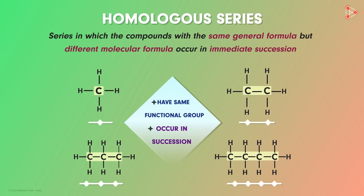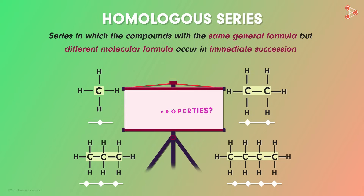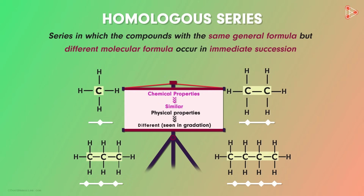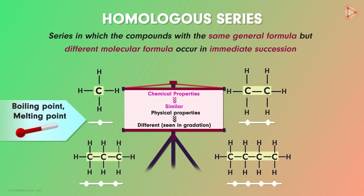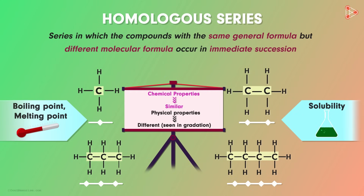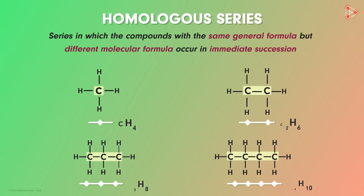Now, if these compounds are in series with the same functional group, you might think their properties are also the same — but that would be wrong. Not all properties of elements in the homologous series are exactly the same. The chemical properties are definitely similar, as they are dependent on the functional group present. However, the physical properties show gradation as we go higher in the series, because physical properties like boiling point, melting point, and solubility differ with changes in molecular mass.